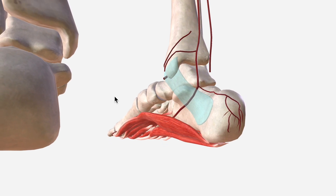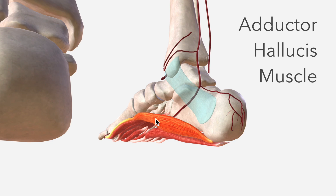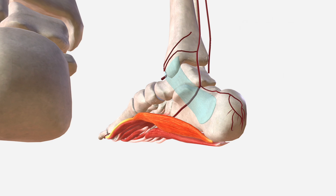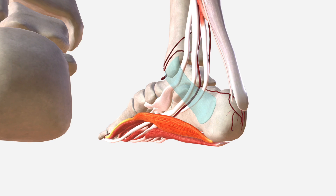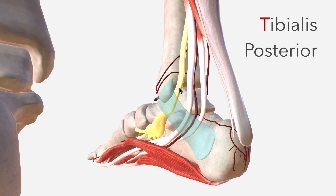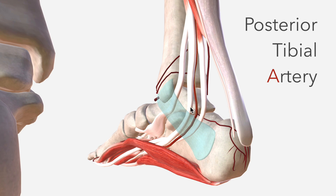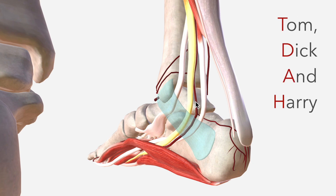Bringing in the muscles of the plantar foot now, we can see the posterior tibial artery slipping in comfortably above the adductor hallucis muscle. Now let's take a step back and bring in the muscles of the posterior compartment of the leg. You can see a pretty interesting relationship between the tendons passing beneath the flexor retinaculum and the posterior tibial artery. From anterior to posterior, we have tibialis posterior, flexor digitorum longus, and flexor hallucis longus. The posterior tibial artery sits between these last two. I like to remember the order of these structures with the mnemonic Tom, Dick, and Harry.